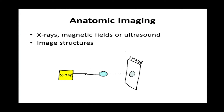For a CAT scan, we have a source that produces x-rays. These x-rays are sent through the body, and there are detectors on the other side. With computer software, it creates an image. My job as a nuclear medicine physician or radiologist is to look at these images and write a diagnostic report for the referring physician.